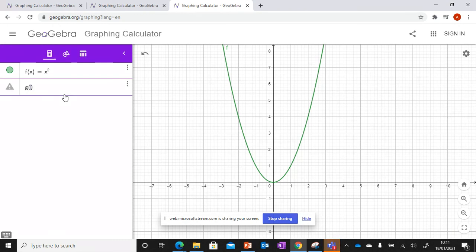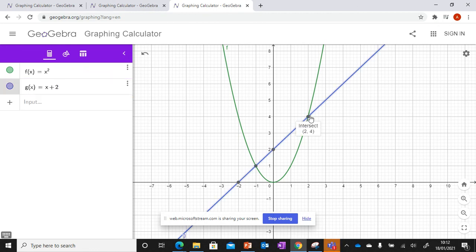We can put g of x, let that equal to x plus 2. And you can see there that it plots g of x on the same one. And it also gives it points of intersection here and here. So you can click on those. It gives the y-intercept. It gives all the important points.